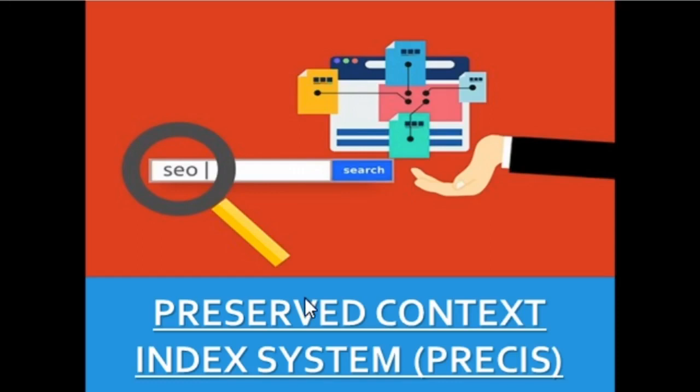In the last class, we discussed pre-coordinate indexing systems. We are continuing with that same concept. We saw what chain indexing is, and now we are going to discuss an extra topic: the Preserved Context Indexing System, that is PRECIS — P-R-E-C-I-S — which is the acronym for Preserved Context Indexing System.